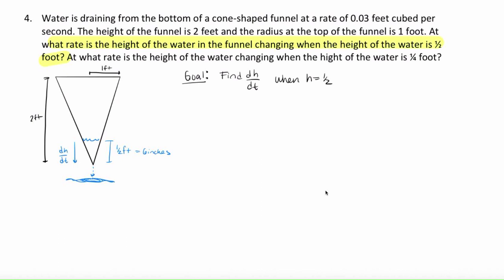And we're given this other piece of information here. We're given that the water is draining at this rate. So we know that the change in volume over time is negative 0.03 feet cubed per second. So let's set this up. And I'm going to erase some of this extra information we don't need. So at least now we know what we're looking for.